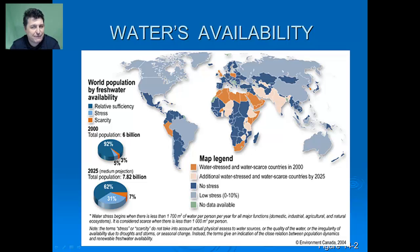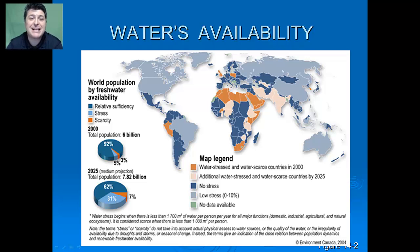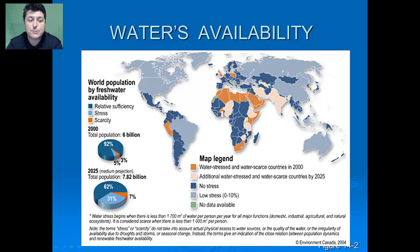The average American uses well over 10 times that amount. In 2000, it was reported that there were 55 countries with a combined population over a billion that averaged well below that level. A country will see water stress when there's less than 1,300 cubic meters per person per year, and it's considered a scarce resource when there's less than 1,000 cubic meters per person.